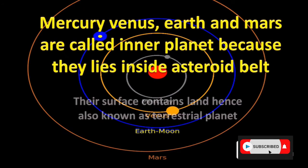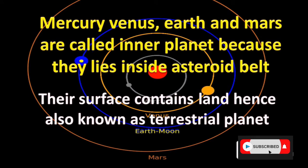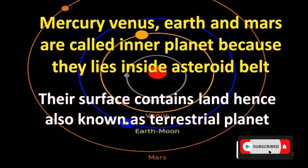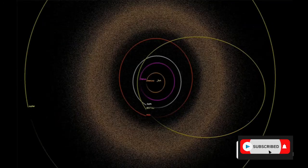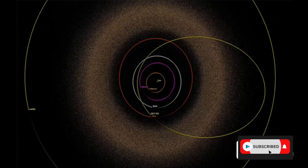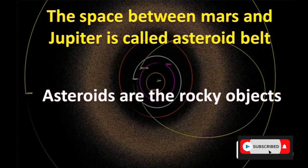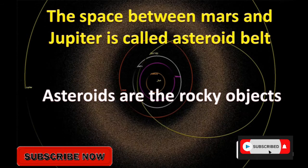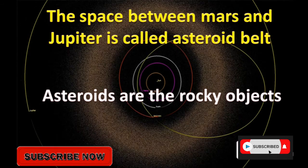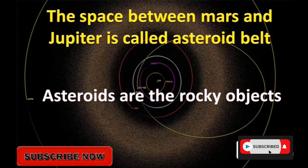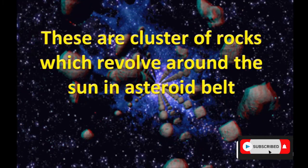Mercury, Venus, Earth, and Mars are called inner planets because they lie inside the asteroid belt. Their surface contains land, hence they are also known as terrestrial planets. The space between Mars and Jupiter is called the asteroid belt. Asteroids are rocky objects — clusters of rocks which revolve around the sun in the asteroid belt.